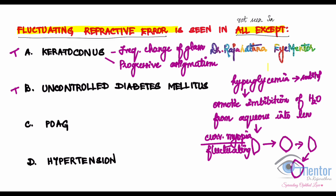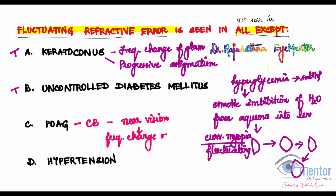Now what about POAG? In primary open angle glaucoma, there is some malfunction in the ciliary body — a weakness in the ciliary body — so accommodation is suffering because of that. The patient will have a problem with near vision, so there will be frequent change of presbyopic glasses. Because POAG is a disease of the elderly primarily, it affects near glasses. So it is seen in POAG also.